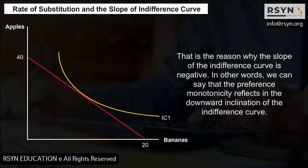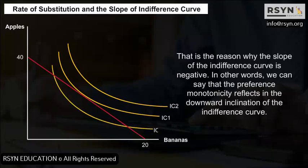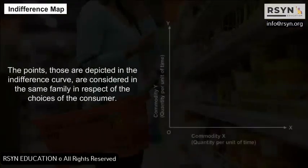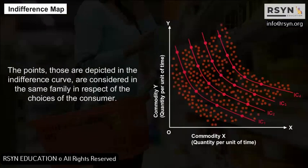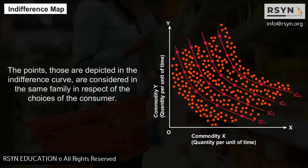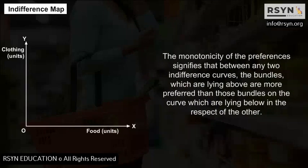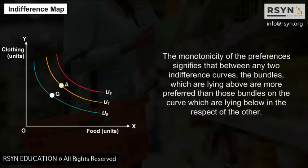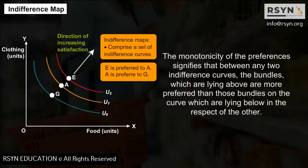Indifference Map: The preference monotonicity reflects in the downward inclination of the indifference curve. The points depicted in the indifference curve are considered in the same family with respect to the consumer's choices. The monotonicity of preferences signifies that between any two indifference curves, the bundles lying above are more preferred than those bundles lying below.